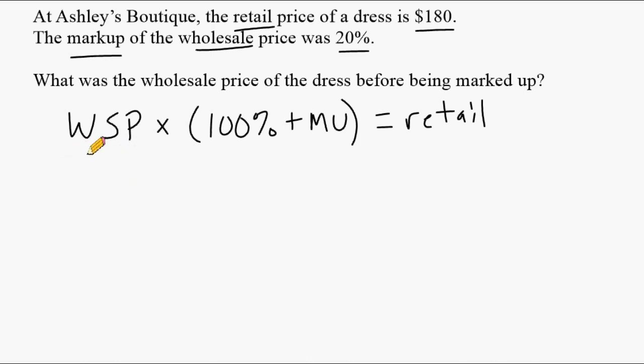So what we're going to do here is this. They don't give us what the wholesale price is. So what I'm going to do is just put a W for now. And we know we have to multiply that by 120%. Because the percent markup is given, so we're going to take 100% and add that to 20%. And that means we have to take the wholesale price and multiply that by 120%. But remember, we have to write that as a decimal. And that's going to be equal to the retail price, which is given, and that is 180.